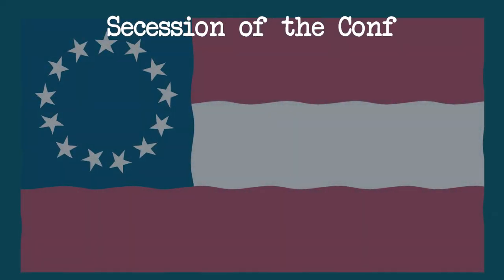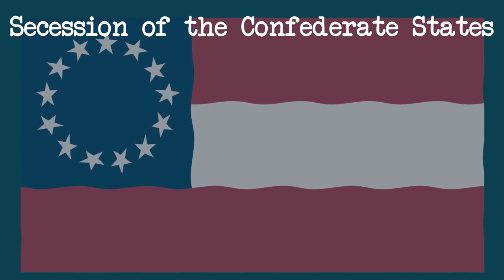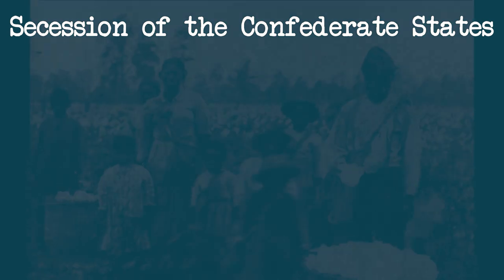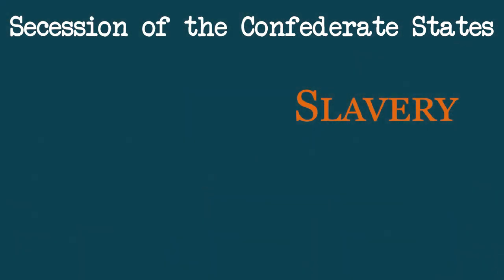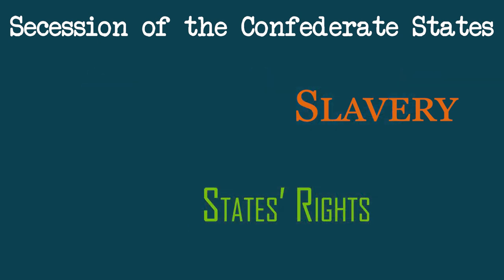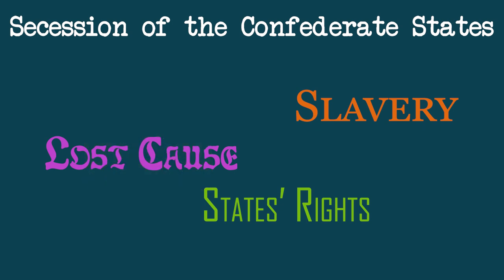When discussing the causes of the secession of the Confederate States, you will find three different narratives prevalent throughout history. The first one is that the cause can be found overwhelmingly, or even exclusively, within the issue of slavery. The second one is a more legalistic and ideological argument about the concept of states' rights, whereas the third one is the lost cause narrative. It would probably be best to summarize each of these historical readings individually and then investigate which one is the most believable.